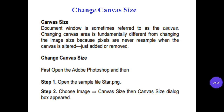After that, change canvas size. Canvas Size — the document window is sometimes referred to as the canvas. Changing the canvas area is fundamentally different from changing the image size because pixels are never resampled when the canvas is adjusted; they are only added or removed.